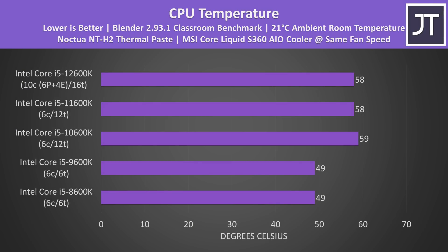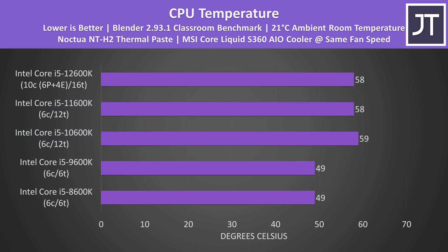Although 12th gen was using less power than 11th gen, the 12600K was running at the same temperature as the 11600K, while the 10600K was only a degree warmer — basically the same. This contrasts with the i7 comparison where 12th gen was about 10 degrees warmer. 9th and 8th gen were around 10 degrees cooler owing to them not having hyperthreading, but as we've seen performance is much lower as a result.